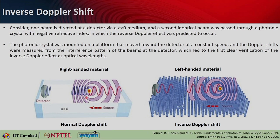An experiment demonstrated this using two beams: one directed through a medium with positive refractive index, and another through a photonic crystal with negative refractive index. The photonic crystal was mounted on a platform moving toward the detector at constant speed, and Doppler shifts were measured from interference patterns. The result was a clear verification of the inverse Doppler effect — when the source moved toward the detector, a red shift was observed instead of the expected blue shift.